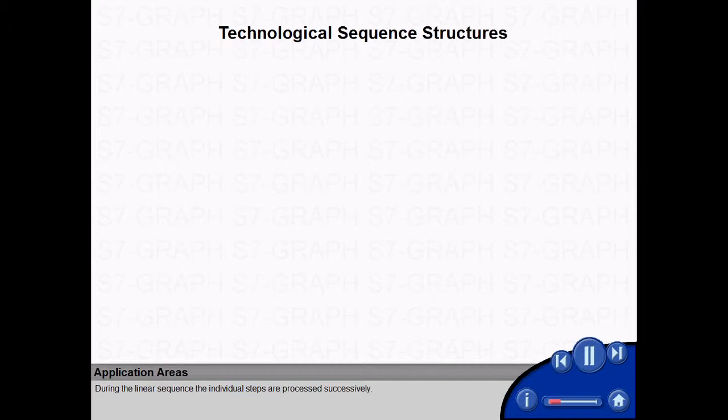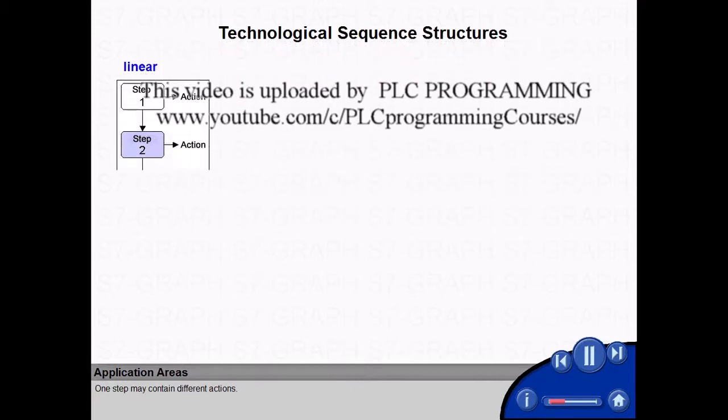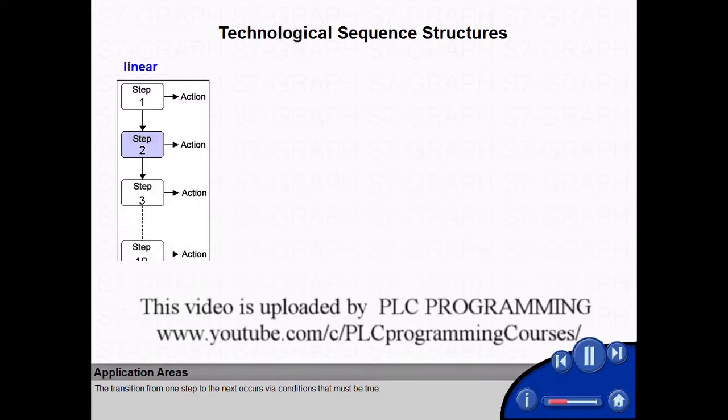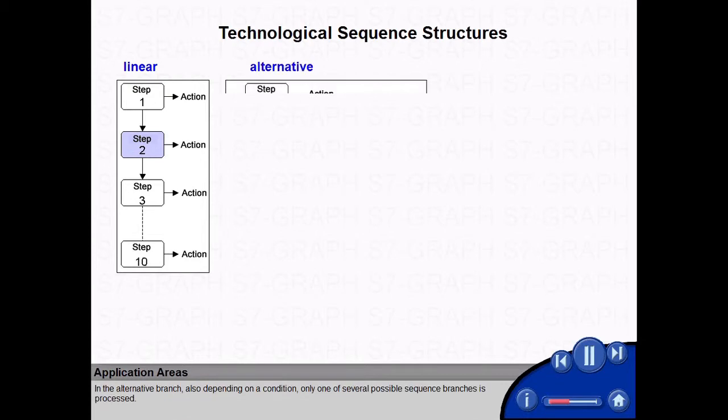During the linear sequence, the individual steps are processed successively. One step may contain different actions. The transition from one step to the next occurs via conditions that must be true.